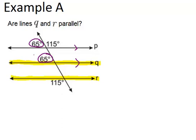Because this angle is 65 degrees, this angle has to be 115 degrees because they are a linear pair. I notice this angle of 115 degrees matches with this angle over here. Because these angles are the same, line Q has to be parallel to line R. These are called alternate exterior angles.